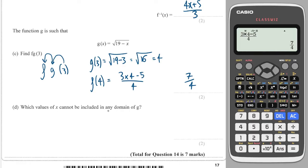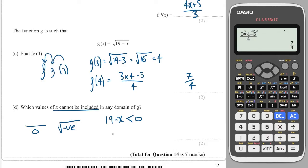It says which values of x cannot be included in the domain of g. There are two things you can't do: you can't divide by 0 and you can't square root a negative. In this case we're not dividing, but we are square rooting, so 19 minus x must be greater than 0 — it must be positive. The values that cannot be included are those that make it negative. So adding x to both sides tells me x cannot be greater than 19.